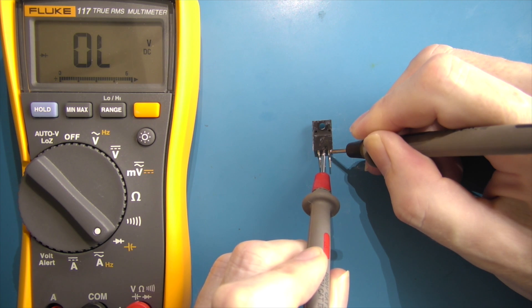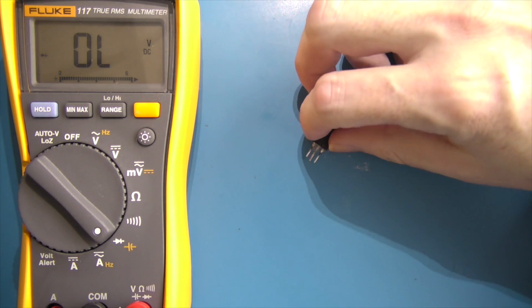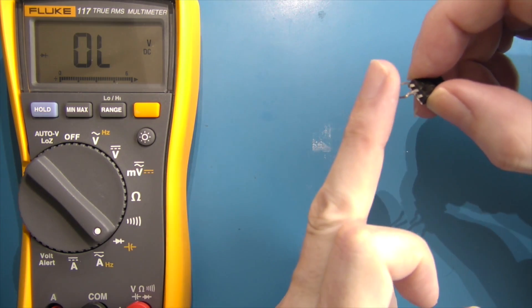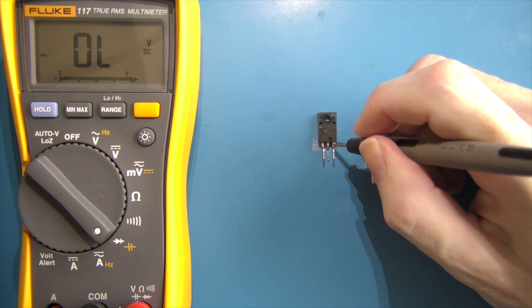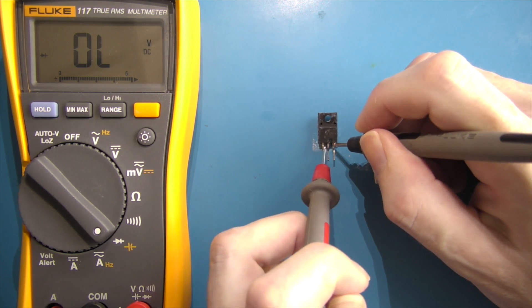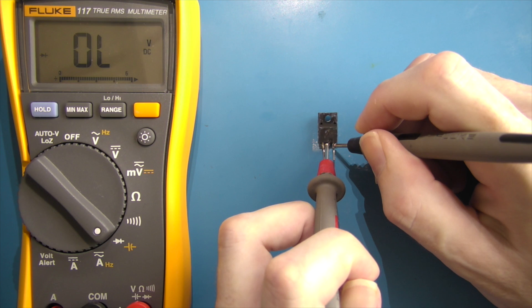Using my finger, I short the gate and the collector. Placing the black lead back on the emitter and now putting the red lead back on the collector, I can see the IGBT has now turned off. This is a good IGBT.